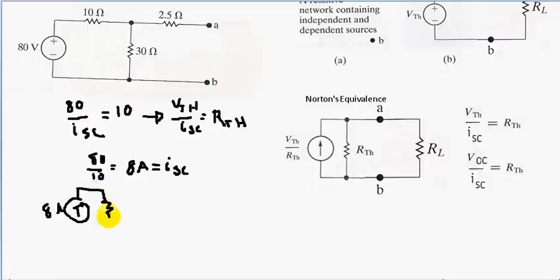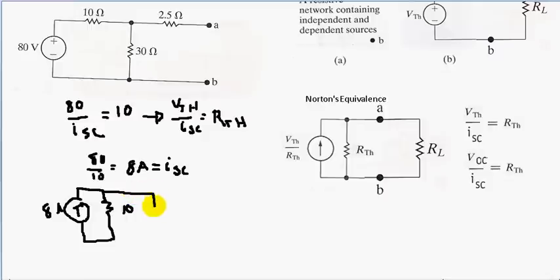We have 10 ohms in parallel with our 8 amp current source. Now we add back the rest of the circuit: a 30 ohm resistor and a 2.5 ohm resistor.